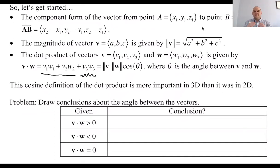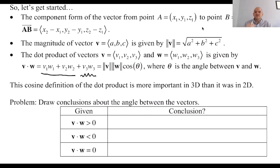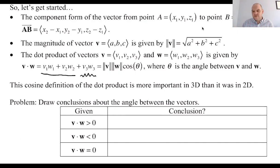This is really important because theta is going to be the angle between the vectors. In two dimensions you could get away with plotting everything and working things out. In three dimensions it's basically impossible to think about visually. So we really need to understand how the dot product relates to the angle between vectors. Often the only things that matter are: are the vectors orthogonal — meaning they form a right angle — is the angle acute, or is the angle obtuse? Those are the three cases.